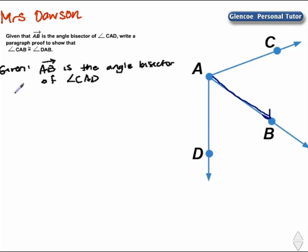By the definition of angle bisector, that means angle CAB and angle BAD must have the same measure. The measure of angle CAB must be equal to the measure of angle BAD.